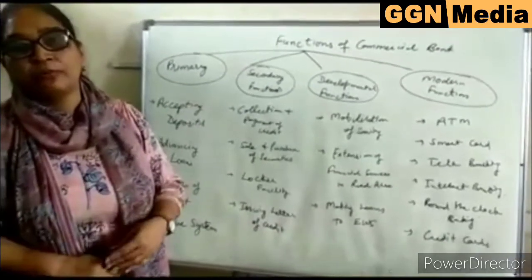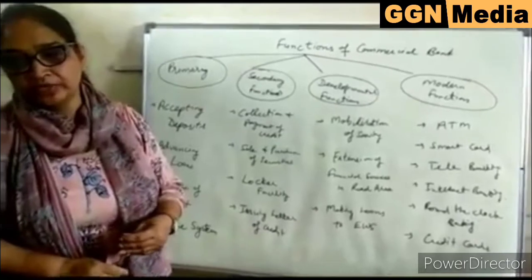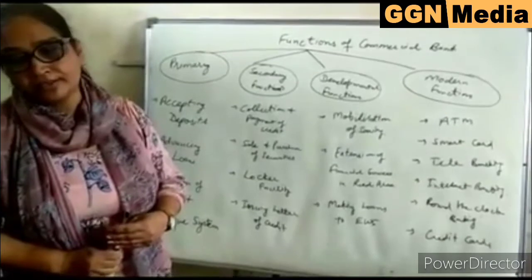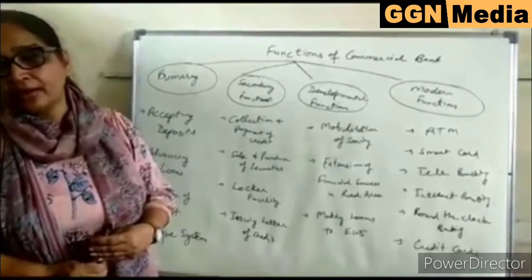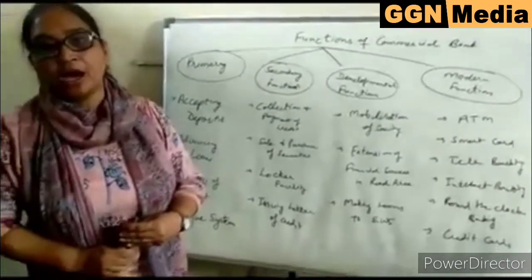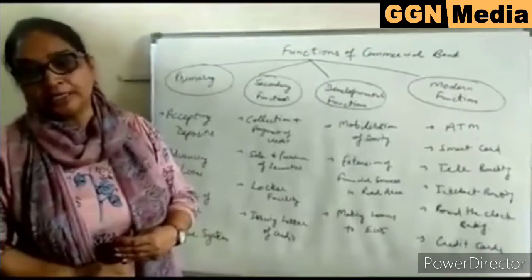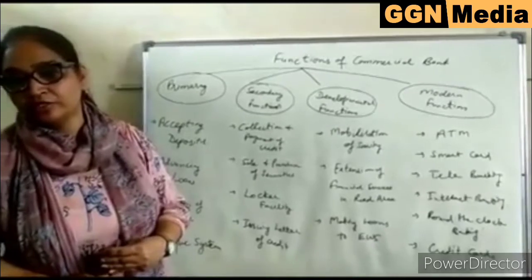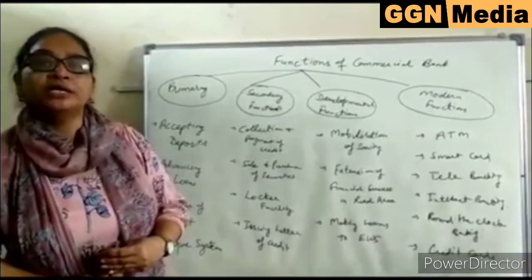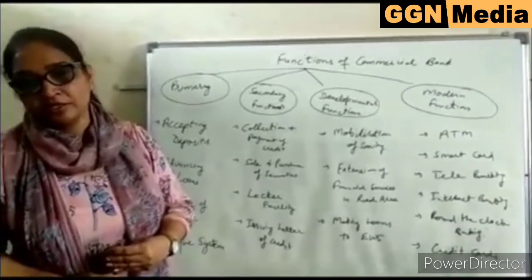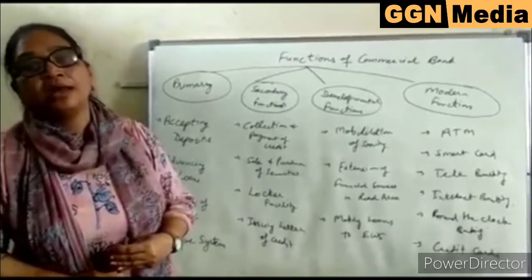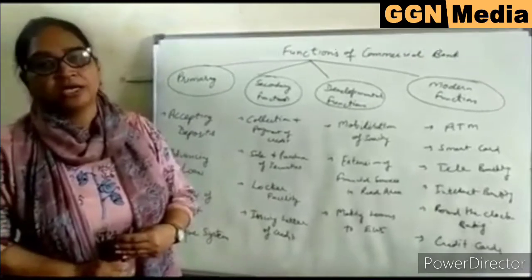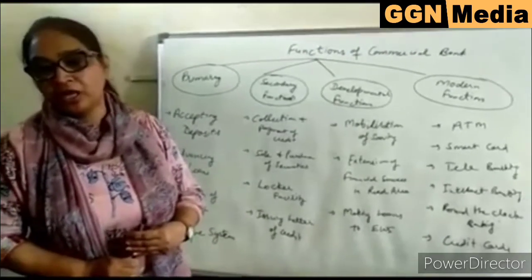Cash credit is a very popular form of advancing loans. In this system, advances are made to the customer on the basis of their current assets, receivables, or fixed assets by hypothecating them in favor of the bank. The entire amount of the loan is transferred into the customer's account, and the customer can withdraw the amount any time. Interest is charged on the whole amount of the loan.